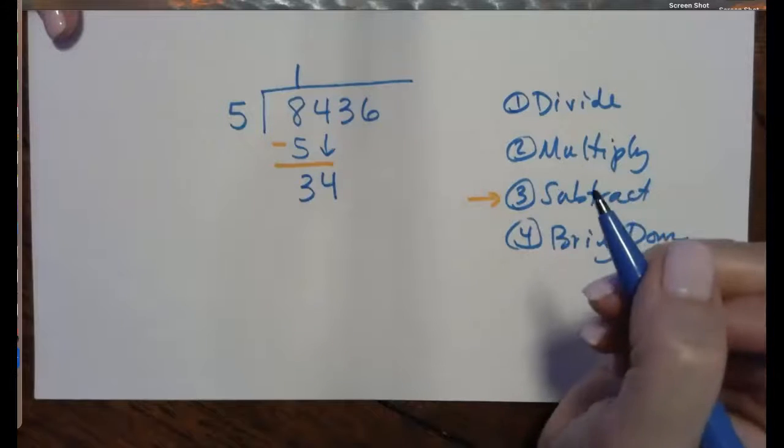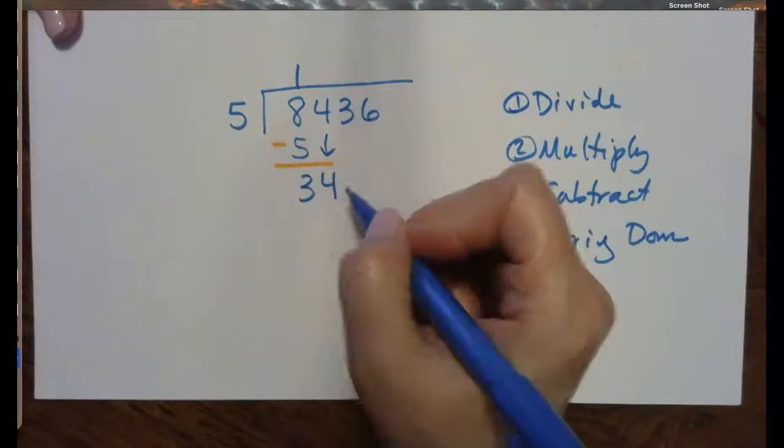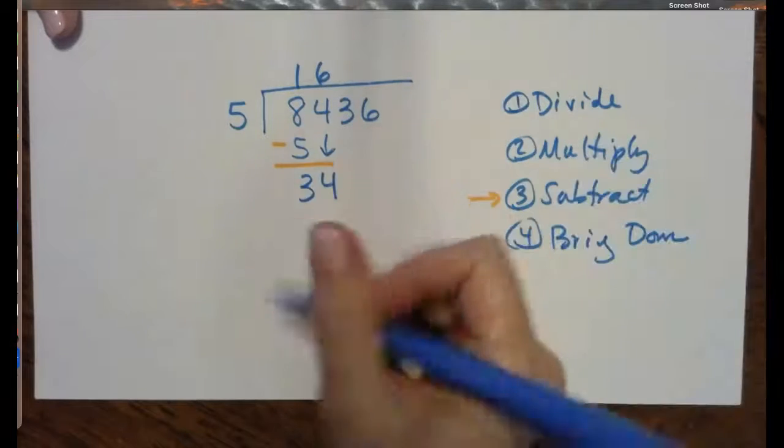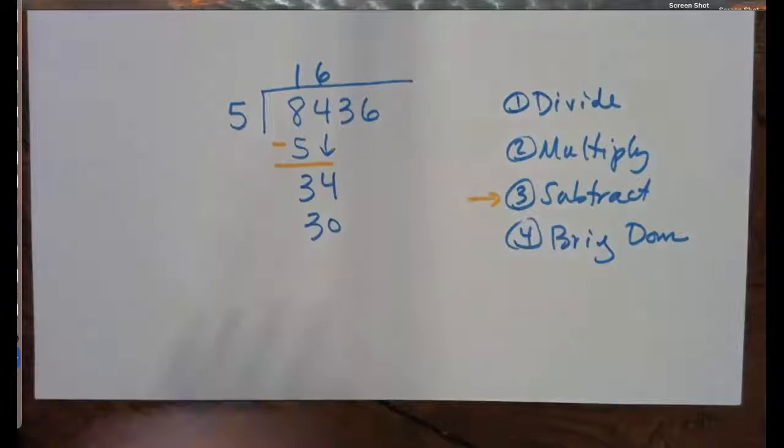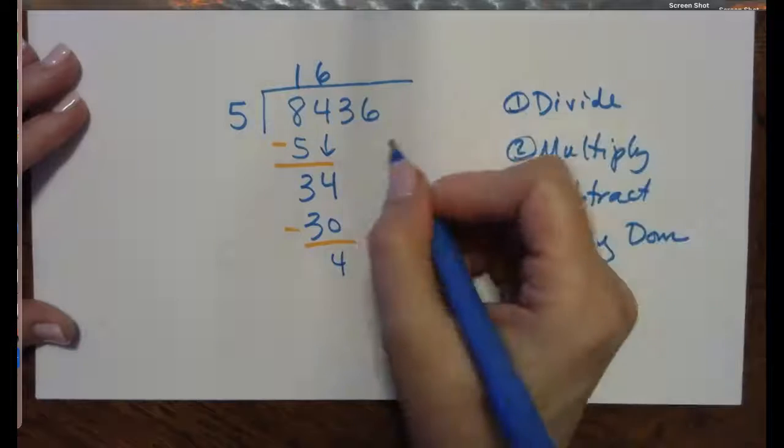So 8 minus 5 is 3, and now we will bring down the 4. The key to long division is doing everything as methodically and neatly as possible. 5 goes into 34, 6 times, 6 times 5 is 30, draw the line, change the sign, that enables us to subtract.